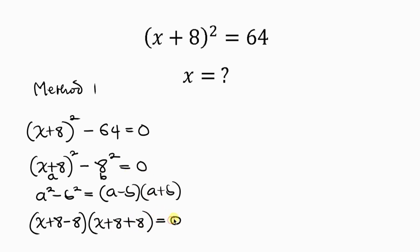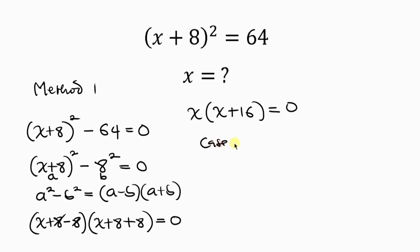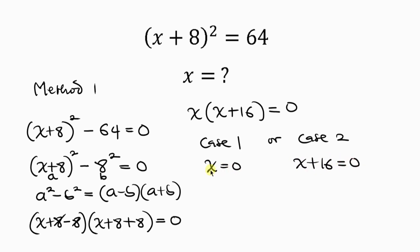Simplifying, 8 minus 8 is 0, leaving X, and 8 plus 8 is 16, giving (X)(X + 16) = 0. There are two cases. Case 1: X = 0. Case 2: X + 16 = 0, so we've got a value of X = 0 from Case 1.